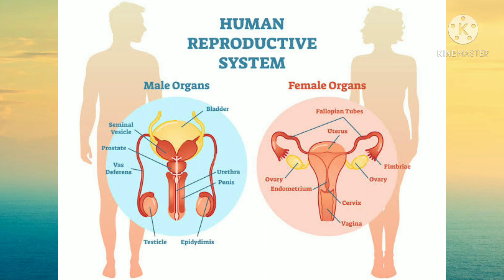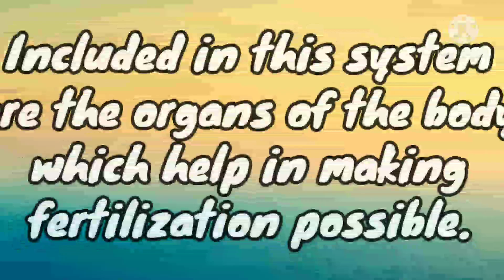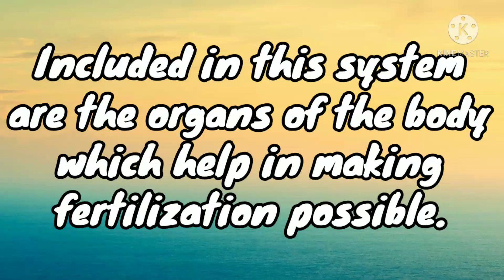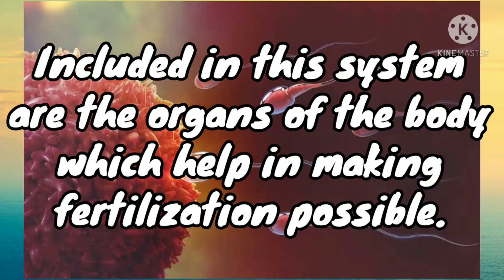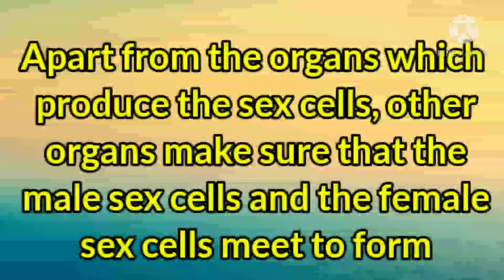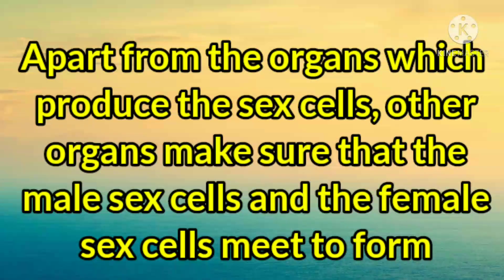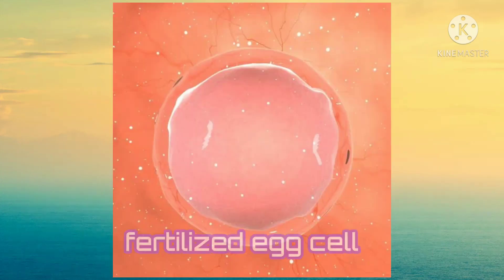The human reproductive system consists of the set of organs which produces the sex cells necessary for reproduction. Included in this system are the organs of the body which help in making fertilization possible. Apart from the organs which produce the sex cells, other organs make sure that the male sex cells and the female sex cells meet to form one fertilized egg cell.